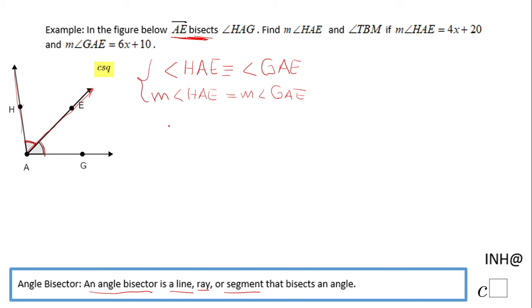The measure of angle HAE is 4x plus 20, and the measure of angle GAE is 6x plus 10.